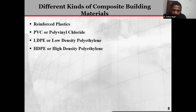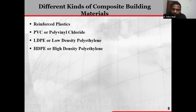Thermoset plastics are a type of plastic where, during the curing process, polymers cross-link together to make irreversible bonds. These plastics have good strength, superior heat resistance — for example, fiberglass rebar, carbon fiber, and fiberglass boat hulls. The second category is thermoplastic reinforced plastic, which also undergoes a curing process but differs from thermoset.